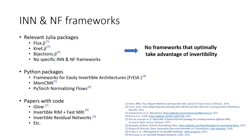The big challenge of having a memory efficient implementation of invertible neural networks is that it's not very easy to integrate and fully take advantage of this property when writing invertible neural network frameworks on top of existing machine learning libraries. In the Julia language, there does not seem to be any packages for invertible neural networks.